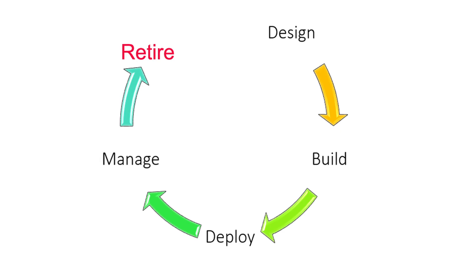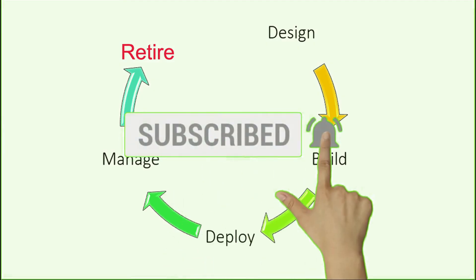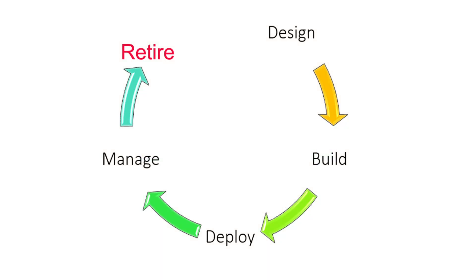If we talk about the lifecycle of an API in MuleSoft specifically, there are different stages through which an API passes. At a high level, the first stage is the design phase, then the API is implemented in the build phase. Once implemented, its output is a deployable artifact which is deployed to the runtime. Then comes the crucial part of managing and ensuring seamless performance. And last but not least, once an API has been deprecated, we retire it and bring in a new version to keep the business in continuation.